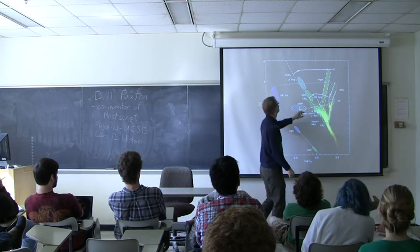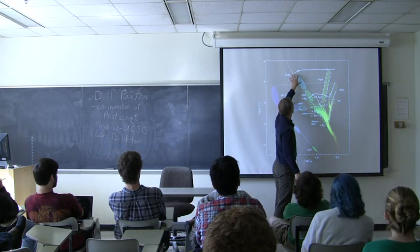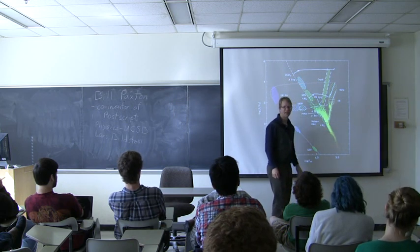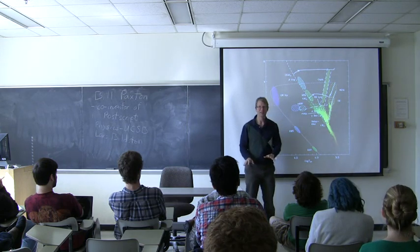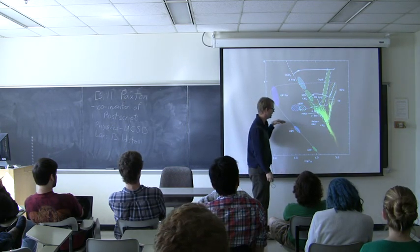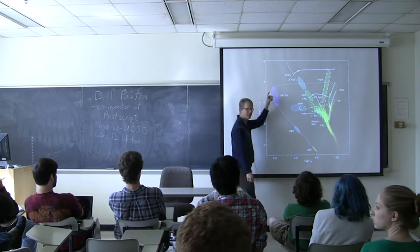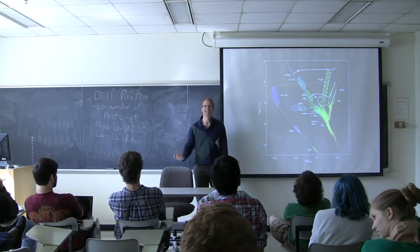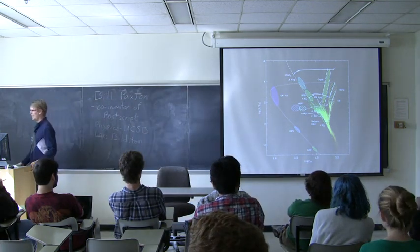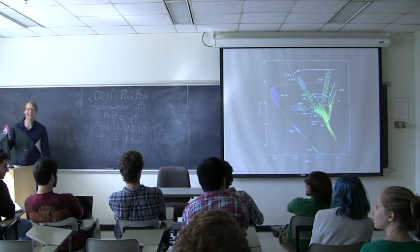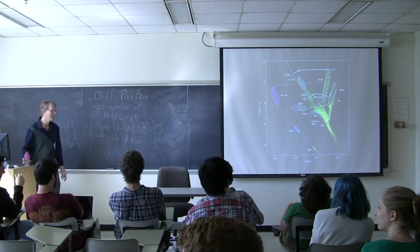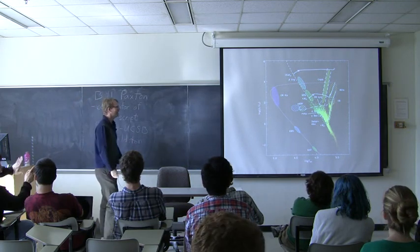So I think I've heard that they did that because the main sequence was originally thought of as a cooling track, and they managed to evolve from left to right. Which is also wrong. Yeah, that's right. So the idea, crazy, was that stars would start out out here, and they would contract, and they would get dimmer, and they would just go down here. Completely, utterly false.